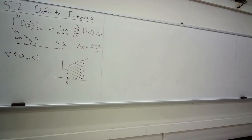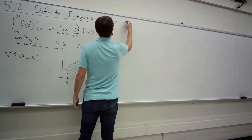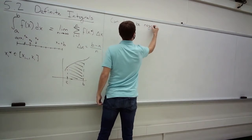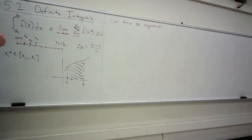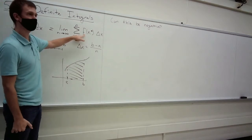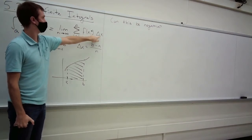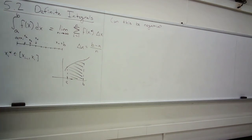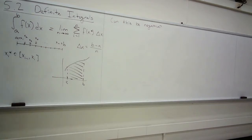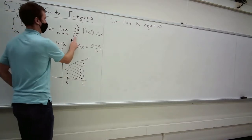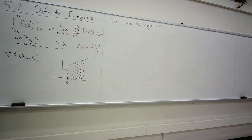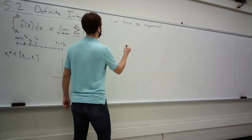Quick question: can the definite integral be negative? It's an area — can't that only be positive? If you look at how it's defined, we use function heights times interval widths. The widths are always positive, but the function values don't have to be. Pick any negative function, and you're adding up a bunch of negatives. So there are lots of functions which have negative area.